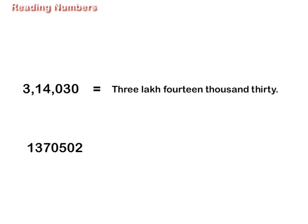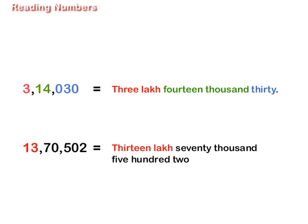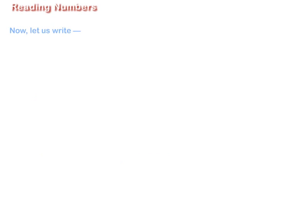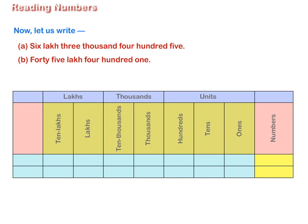The number 3,14,030 is read by placing commas to separate its periods. Similarly, the number 13,70,502, after putting commas, reads as thirteen lakh seventy thousand five hundred and two.